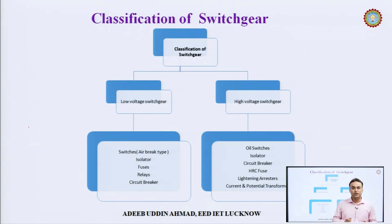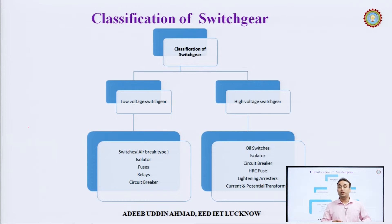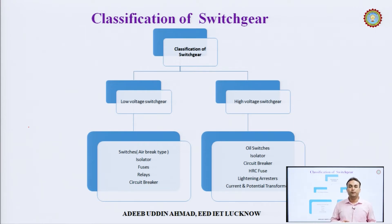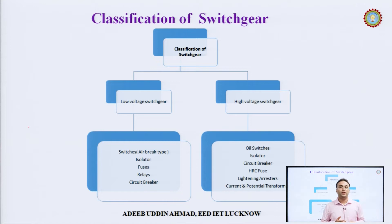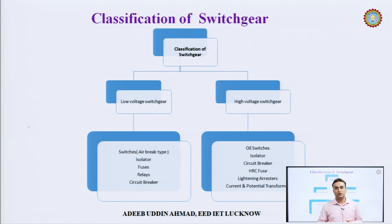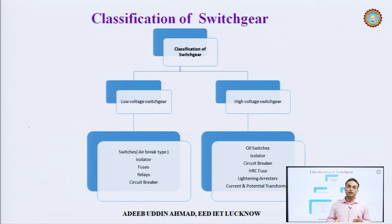Switch gear is very important — it is basically the switching equipment used in the power system along with supporting equipment for protection. Switch gear can be classified depending upon voltage level: low voltage switch gear (typically below 33 kV or 11 kV) and high voltage switch gear (400 kV and above). High voltage switch gear is generally used for transmission and low voltage for the distribution end.